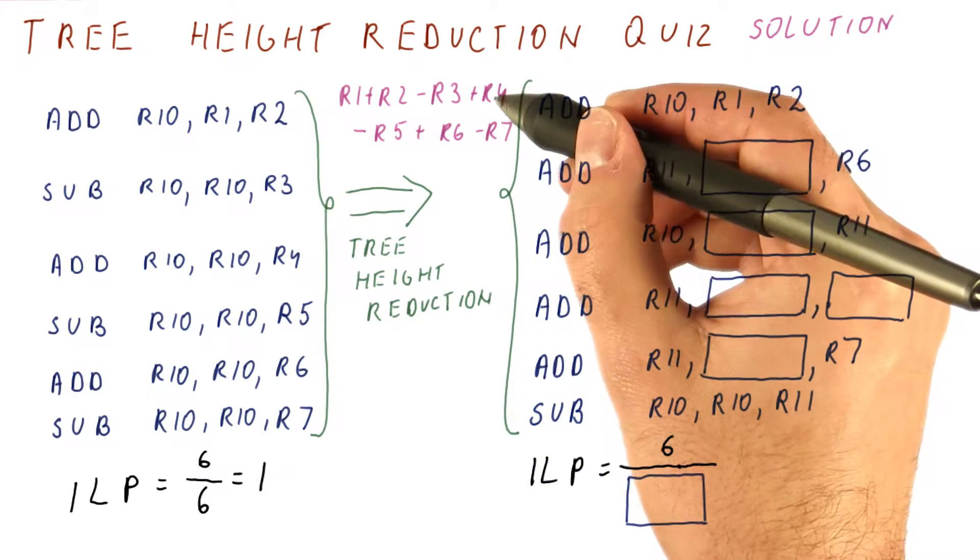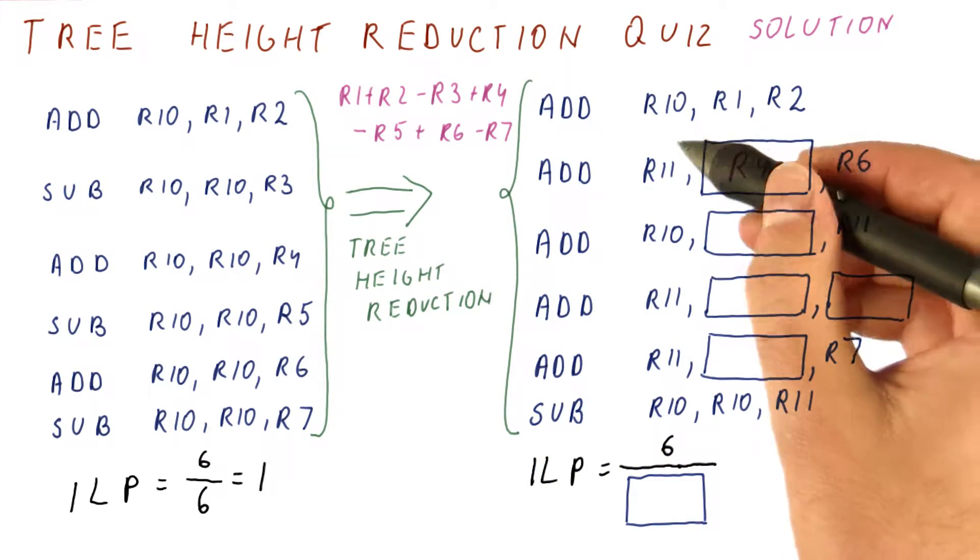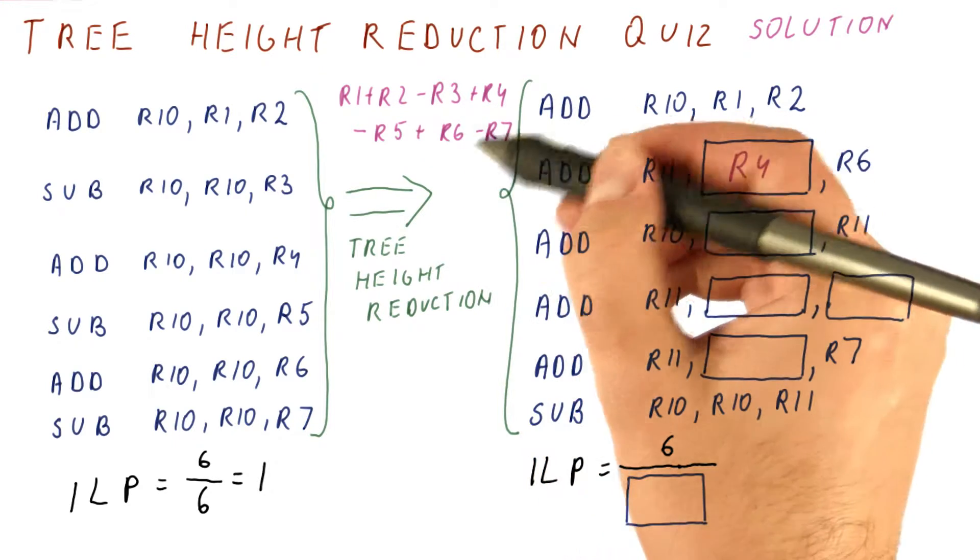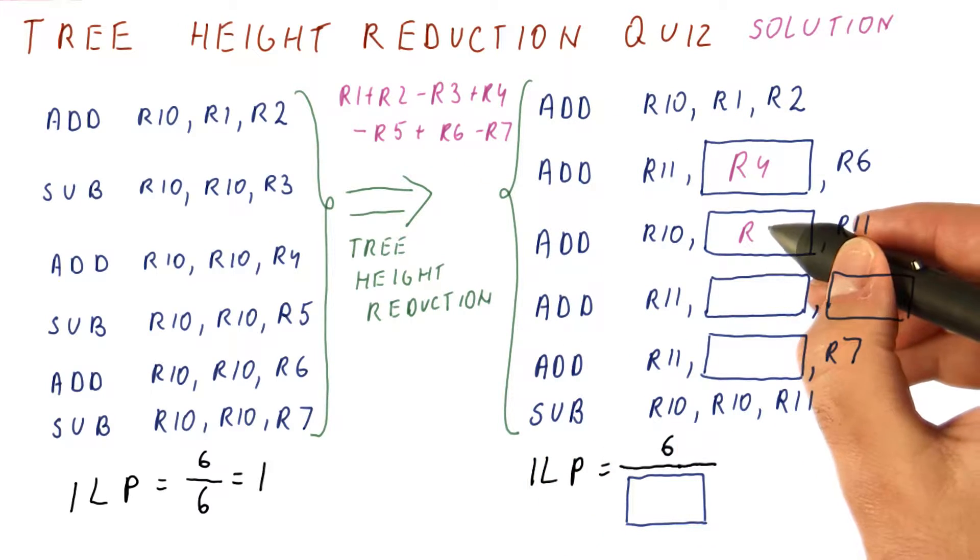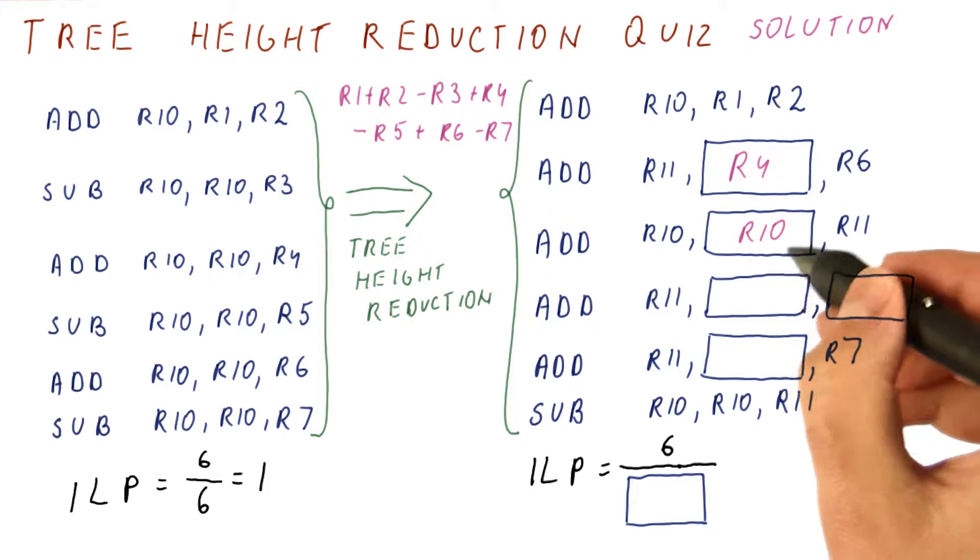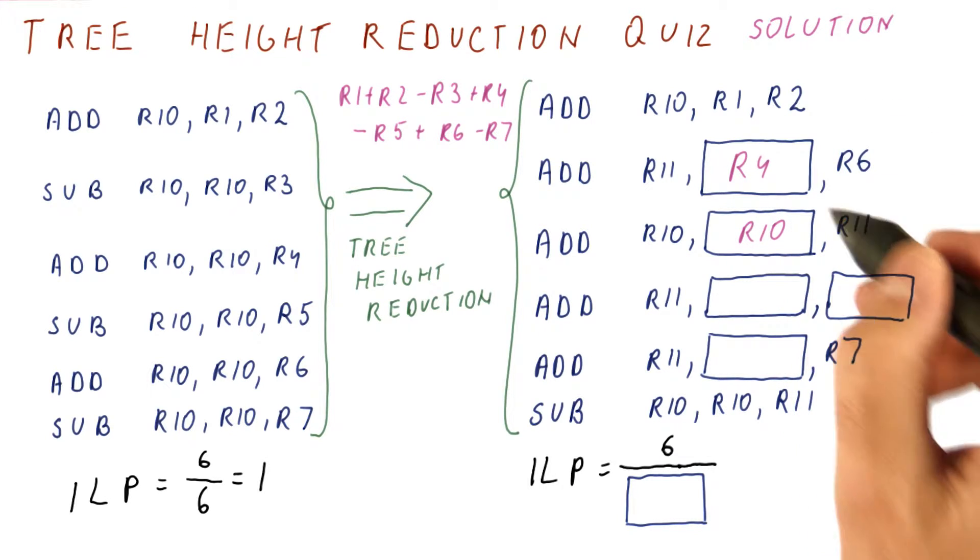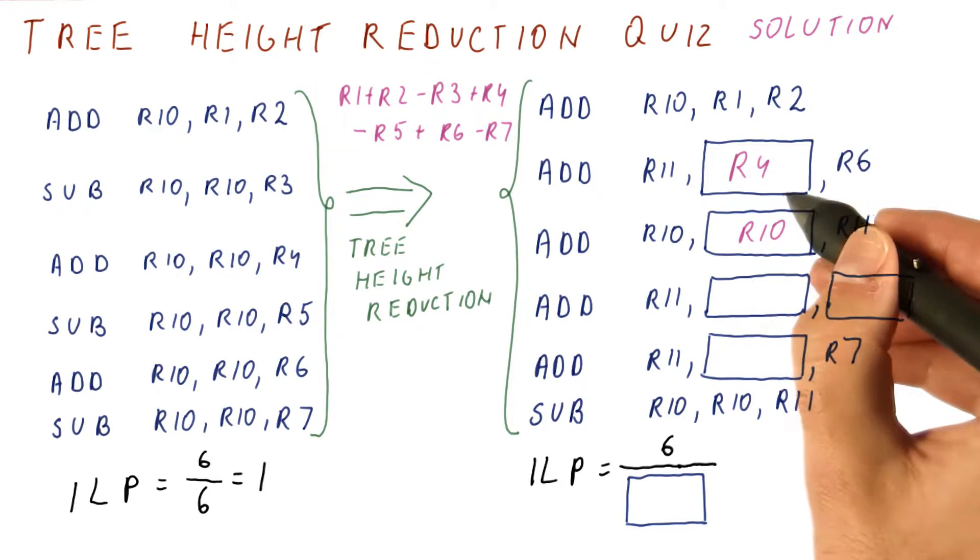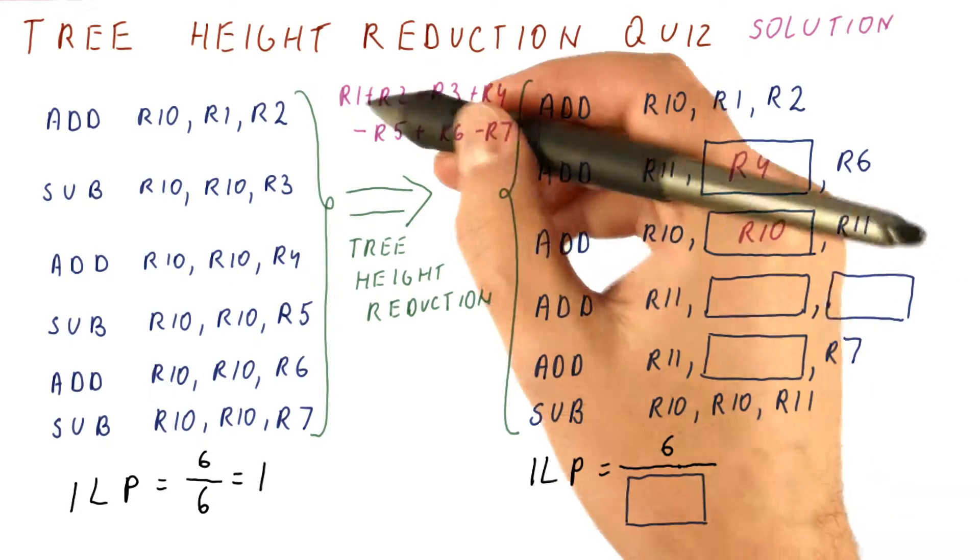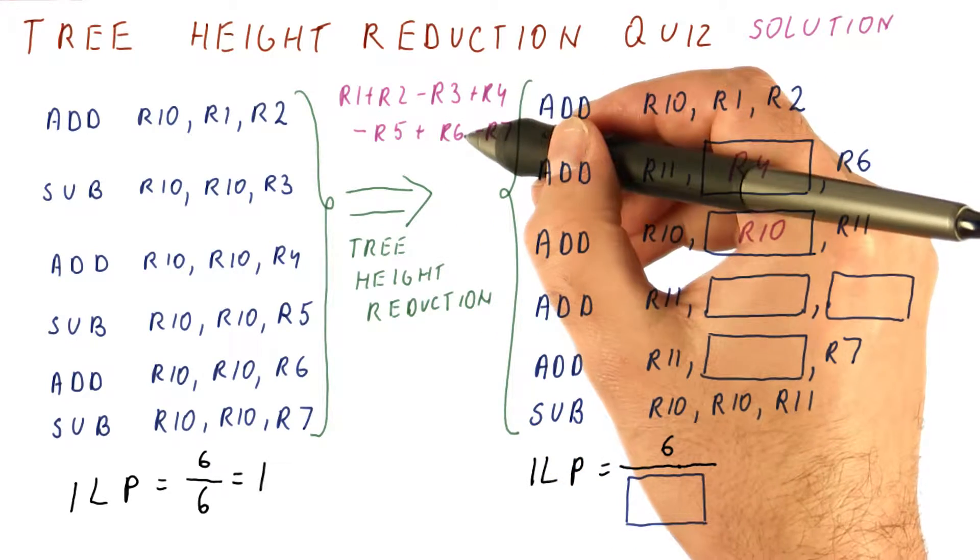Now we're going to add up R4 and R6. Next, the result of the two additions are going to be combined. So we're going to add up what we have for R1 and R2 and what we have for R4 and R6. So now in R10, we have the R1 plus R2 plus R4 plus R6.